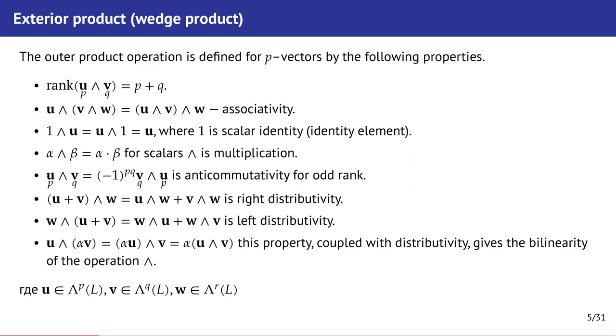The outer product or exterior product can be defined through the tensor product or it can be defined axiomatically. This slide lists the axioms that it must satisfy and the main feature, it's important to note, is the anti-commutativity property for ordering of the p-vectors.